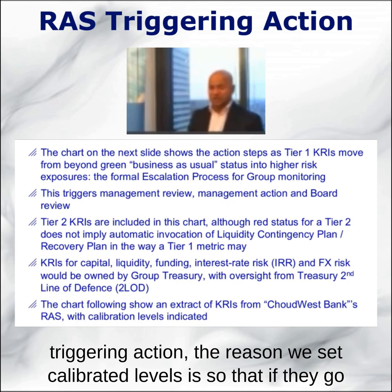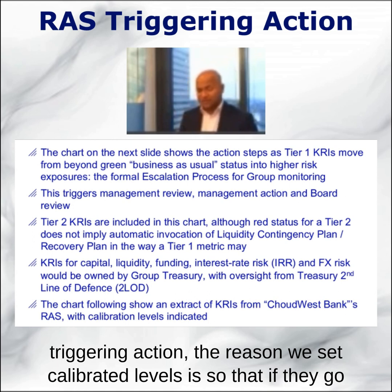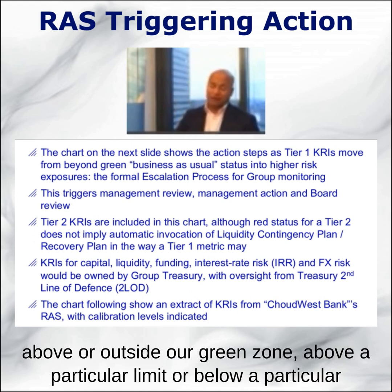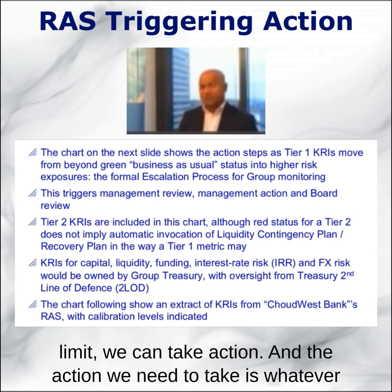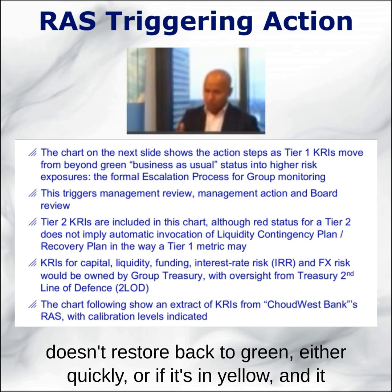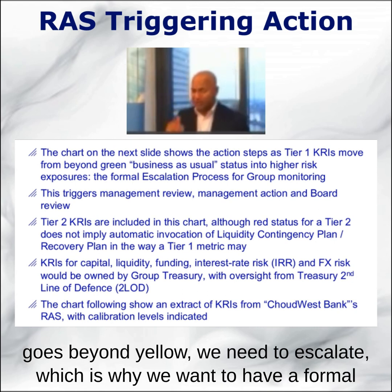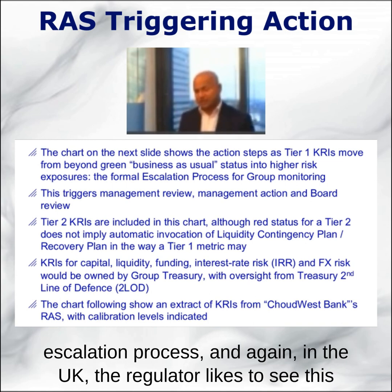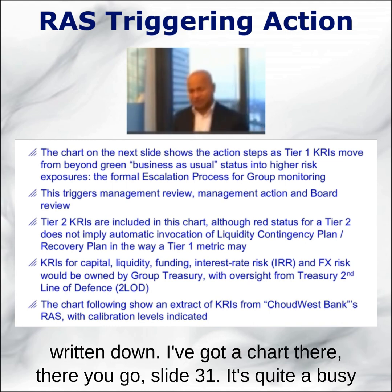Now, triggering action. The reason we set calibrated levels is so that if they go outside our green zone — above or below a particular limit — we can take action. The action we need to take is whatever needs to be done to restore that indicator back to green. If it doesn't restore back to green quickly, or if it's in yellow and goes beyond yellow, we need to escalate, which is why we want a formal escalation process. In the UK, the regulator likes to see this written down.